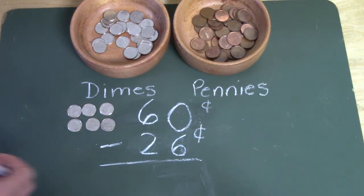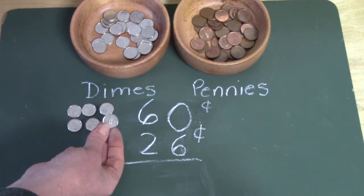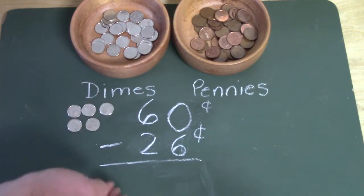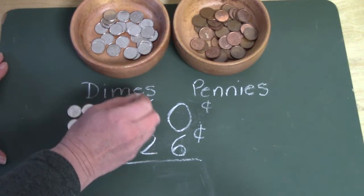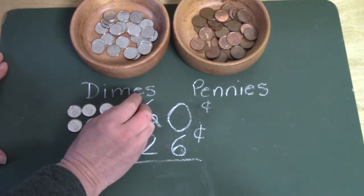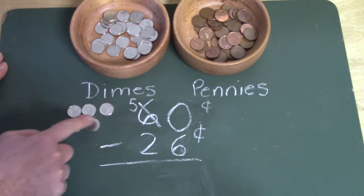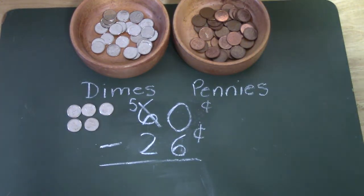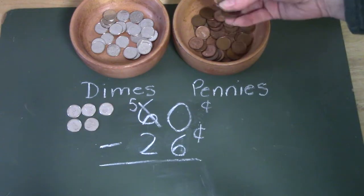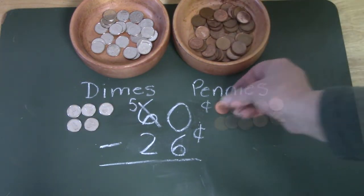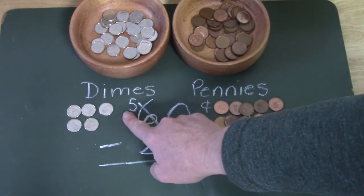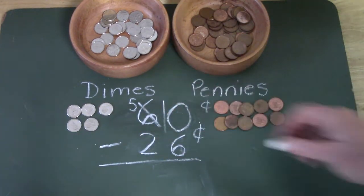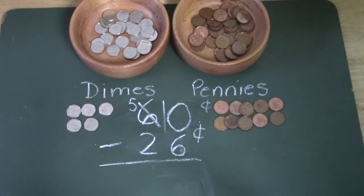We are going to have to trade one of these dimes for some pennies. I'm going to trade a dime in. I'm going to cross off my six — now I have five dimes. How many pennies do I get for that dime? It's ten. I traded in one dime and I was able to trade it in for ten pennies.